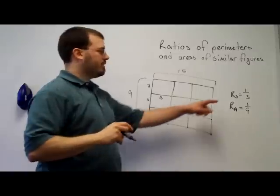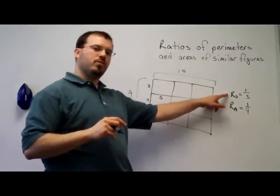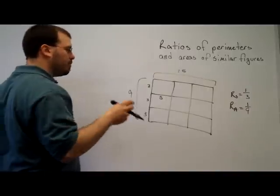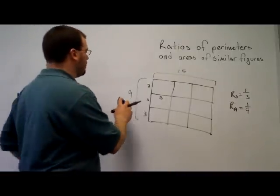So ratio of the sides squared, ratio 1 third, square that, and you get 1 ninth. And then continue this process with quadrupling, times 5, whatever you want to do.